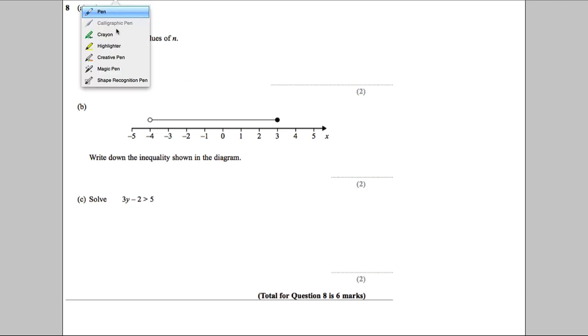Okay, question A. It says n is an integer. What does that mean again? Integer means whole number, so it can't be a fraction or decimal. It's a whole number.